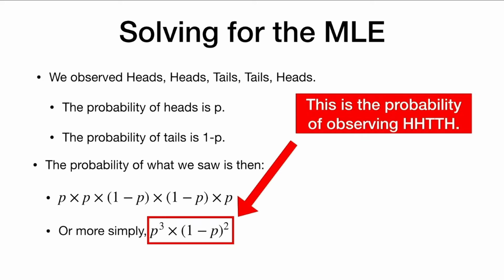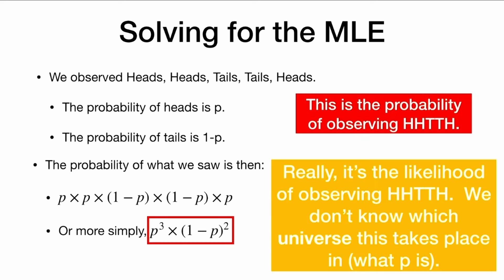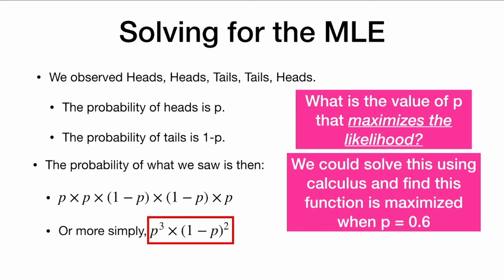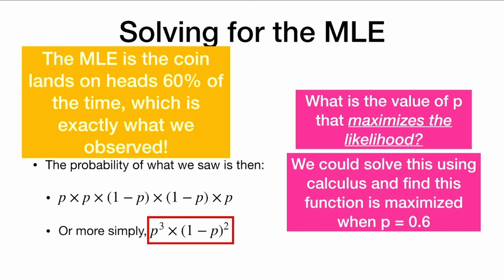So this is the likelihood of observing heads, heads, tails, tails, heads. We don't know what p is, and we're going to try to estimate it. What we want to ask in maximum likelihood estimation is: what is the value of p that maximizes the likelihood? We could solve this using calculus and find that this function is maximized when p equals 0.6. So the maximum likelihood estimate, the MLE, is that this coin lands on heads 60% of the time — which is exactly what we saw.